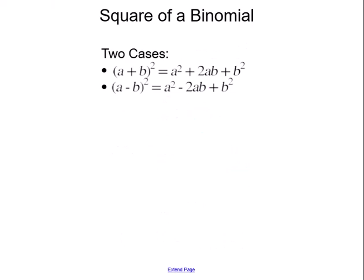Now let's look at the other special case formulas for the square of a binomial. The square of a binomial has two formulas. The first is (a + b)² = a² + 2ab + b². And the second is (a - b)² = a² - 2ab + b².